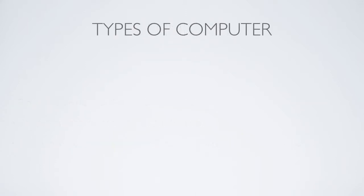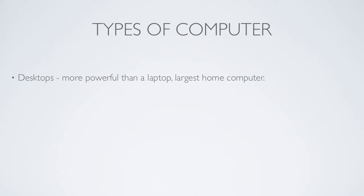There are many different types of computers — you can even build your own. You could build a desk computer that's basically made inside a desk, for example. But focusing on normal computers: there are personal desktop computers, which are basically desktop towers. They are an average normal computer, which you might be using to watch this video. A normal desktop computer is normally fairly powerful compared to a laptop because there is more space. It's probably about 10 or 20 centimeters wide, about half a meter to a meter long, and about half a meter in height.